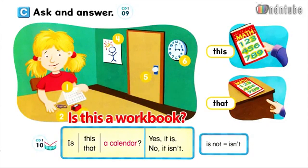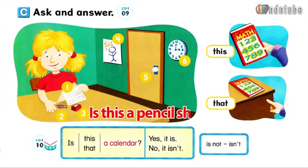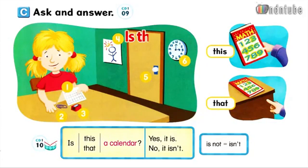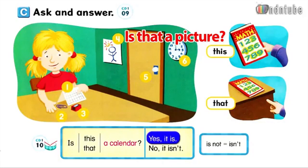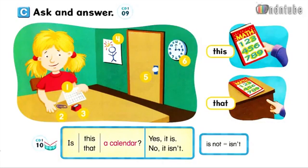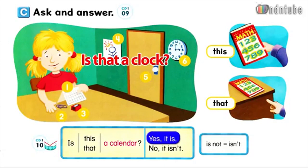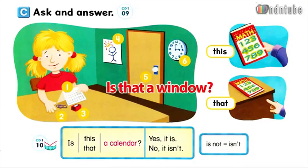Is this a paperclip? Yes, it is. Is this a pencil sharpener? Yes, it is. Is that a clock? Yes, it is. Is that a clock? No, it isn't. Is that a door? No, it isn't.